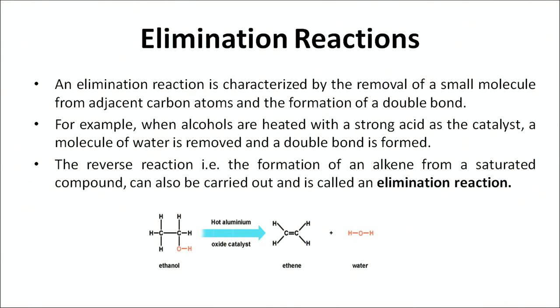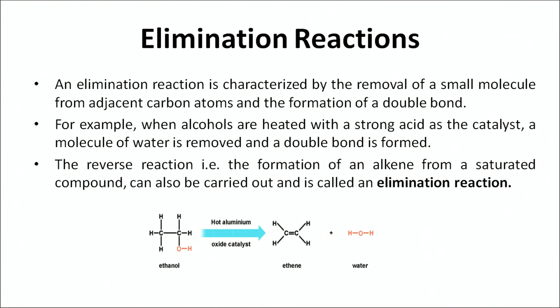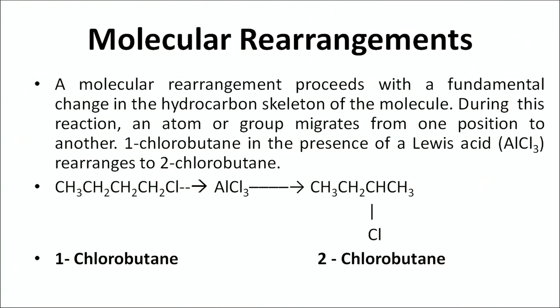Next is elimination reaction. In an elimination reaction, taking the example of ethanol, a particular molecule is eliminated and the product formed is a double-bonded compound. This is also called dehydration, and the reaction takes place in the presence of a certain catalyst. Next is molecular rearrangement. Molecular rearrangement proceeds with a fundamental change in the hydrocarbon skeleton of the molecule; during the reaction, an atom or group migrates from one position to another. For example, 1-chlorobutane reacts with aluminium chloride (a Lewis acid) to form 2-chlorobutane — a rearrangement of atoms within the molecule. Such reactions are called molecular rearrangements.